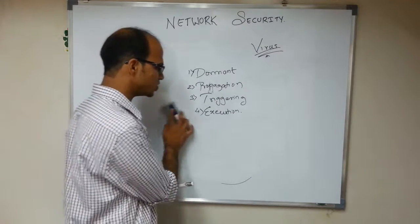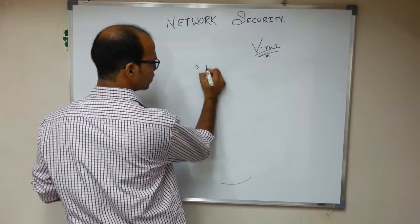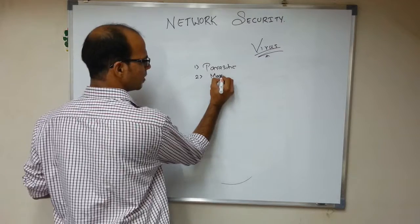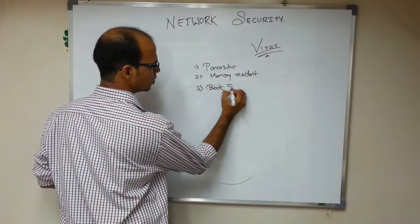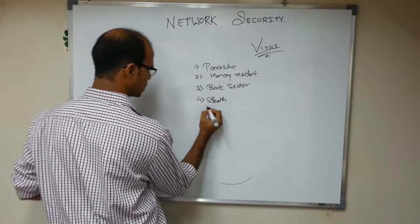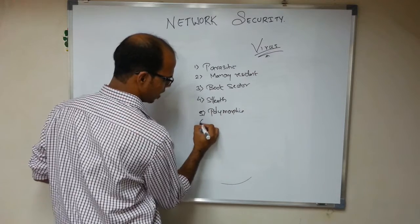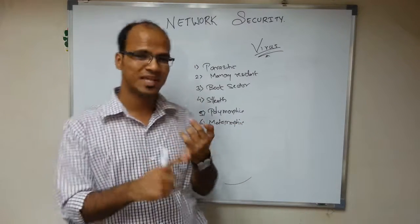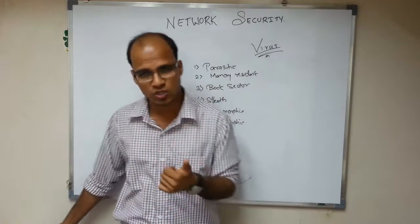Now we'll talk about types of viruses. We have six types: the first is parasitic virus, second is memory resident virus, third is boot sector virus, fourth is stealth virus, fifth is polymorphic virus, and sixth is metamorphic virus.